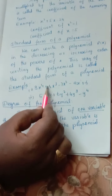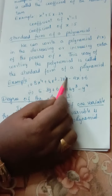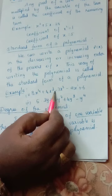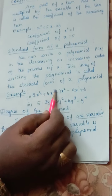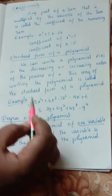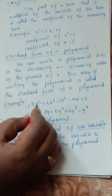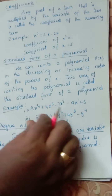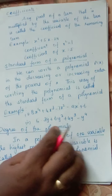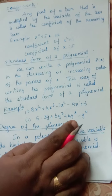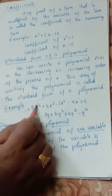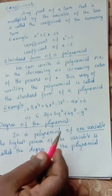So coefficient — for example here, coefficient of x³ is plus 4, coefficient of x² is minus 7. And in the standard form, we write the given terms either in ascending or descending order according to the power of the variable.